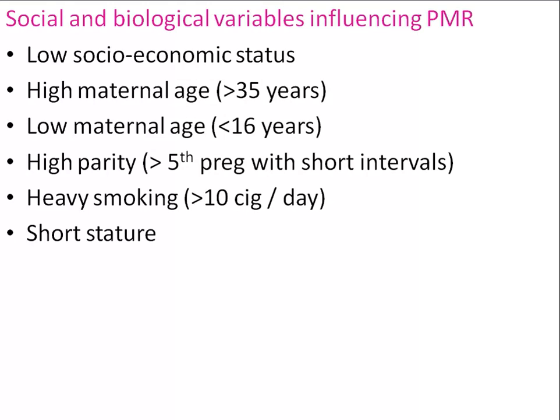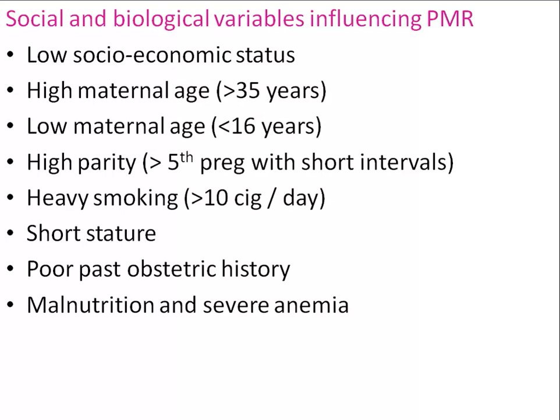Biological variables influencing perinatal mortality: very high maternal age — more than 35 years; very low maternal age — less than 16 years; very high parity — more than fifth pregnancy with a short interval; heavy smoking — more than 10 cigarettes per day; and short stature — less than 140 centimeters.